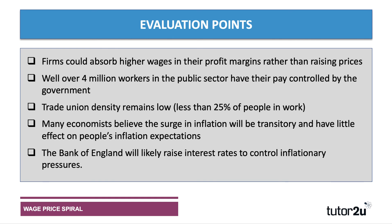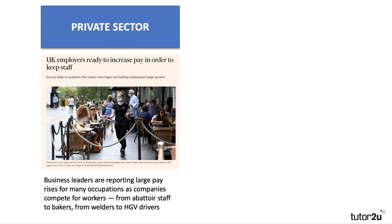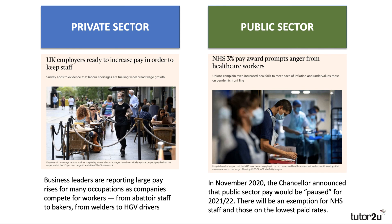The Bank of England, via the Monetary Policy Committee, stands ready and increasingly willing to raise interest rates if they think inflationary pressures — both cost push and demand pull — need to be controlled. In the private sector there is generally lots of evidence that businesses are increasing pay, in some cases by 5%, 10%, 15% to compete for workers — from abattoir staff to bakers, from welders in the construction sector to the HGV driver shortage. Whereas in the public sector there is essentially a pause in pay, the government is freezing pay for the next year, although there is a 3% rise for NHS staff and those on the lowest pay rates.